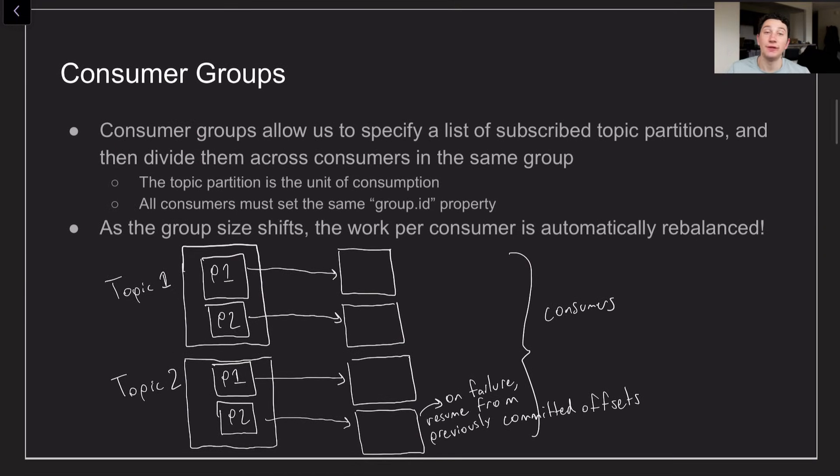So consumer groups are basically a feature in Kafka that's going to allow us to do all of this without having to write our own distributed coordination code because otherwise that would get really complicated, it would make building out these applications a lot harder and waste a lot of developer time. So consumer groups is just going to figure pretty much all of that out for us and give us a little bit of configuration in order to get the exact properties that we want.